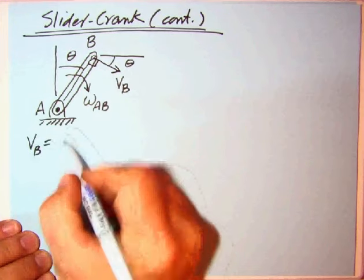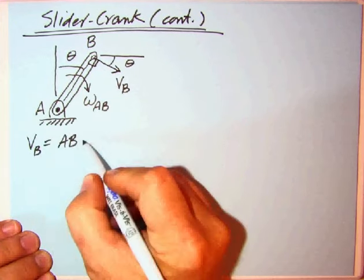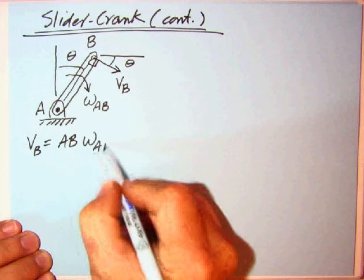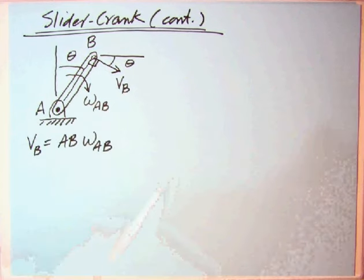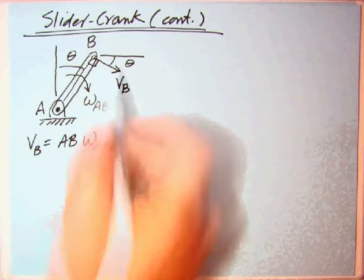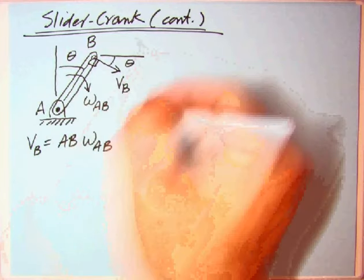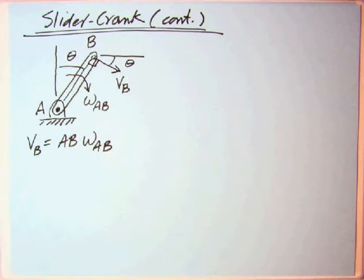VB can only move around in a circle, so it's perpendicular to a line containing AB, and its magnitude is VB equals r omega. In this case, that's the length AB times omega AB in radians per second. So we know everything about VB. We know it's cosine to the right and minus sine down, so we know everything about the crank.